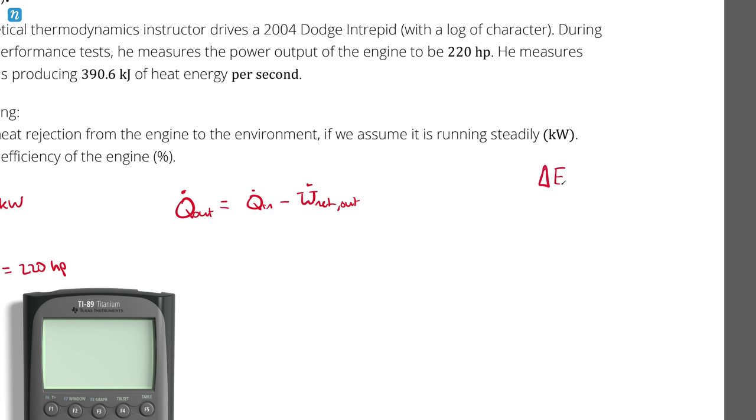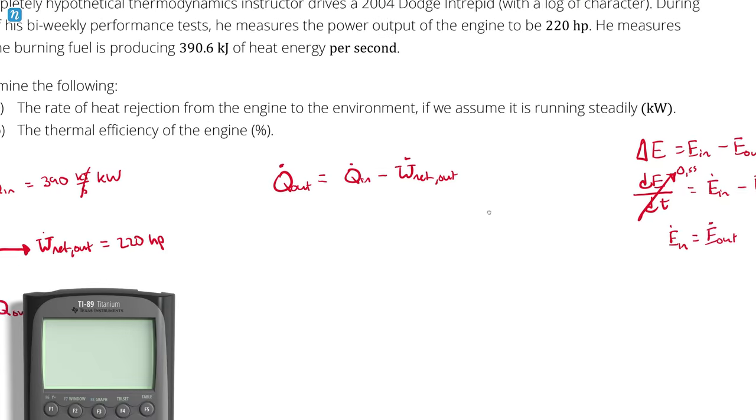If I did an energy balance on this engine, I recognize that it's operating steadily. So I could take this and divide all the terms by dt, and I'd get E dot in and E dot out. So it's steady, nothing changes with time, therefore this is zero. So I'm left with E dot in, the rate of energy entering the system is equal to E dot out, the rate of energy exiting the system.